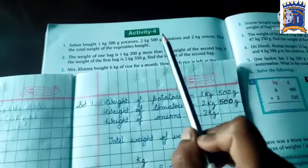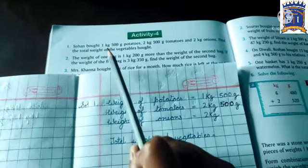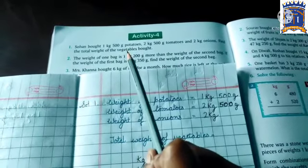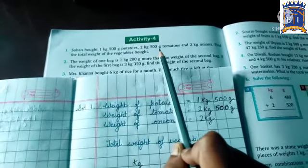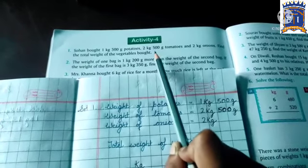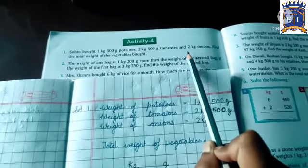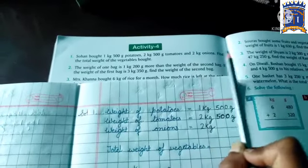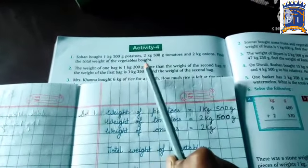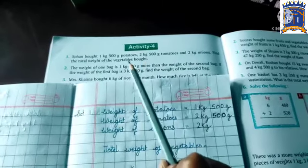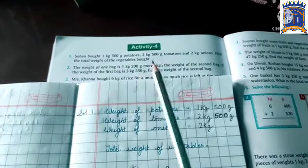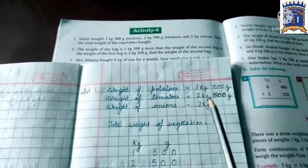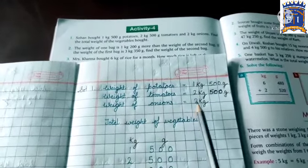Now class activity 4. Sohan bought 1,500 gram potatoes, 2,500 gram tomatoes, and 2 kilograms onions. So find the total weight of the vegetables bought. The weight of potatoes, weight of tomatoes, and the weight of onions is 2 kg.